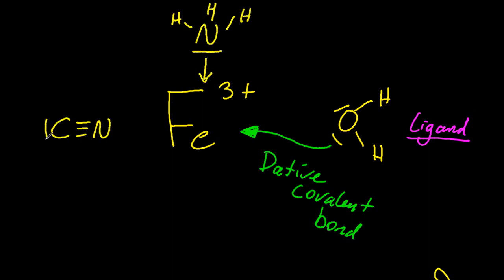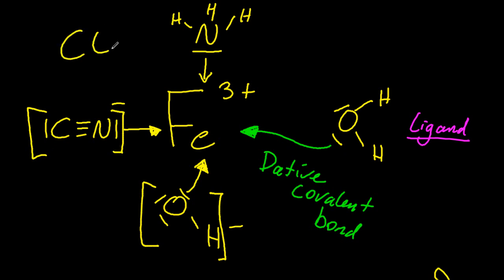Ammonia, the cyanide ion, and other ions, not necessarily negative, they could be neutral, but never positive, can be ligands. Because they can donate this lone pair of electrons. Finally, chloride.